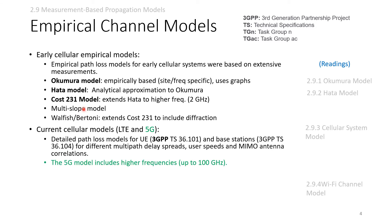For cellular systems like LTE and 5G, there are detailed path loss models for user equipment and base stations. These are standards by 3GPP, which stands for Third Generation Partnership Project. TS is Technical Specification. We have reports for different multipath delay spreads. Models account for MIMO antenna correlation and include high frequencies up to 100 GHz for 5G.